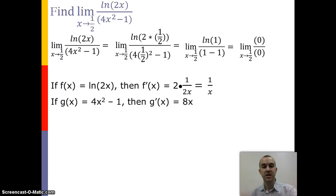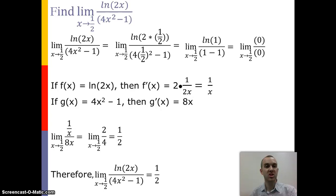Now let's look at 1 over x divided by 8x, approaching one half. And when we do this, that simplifies to one half. So that means that our original limit is actually equal to one half.